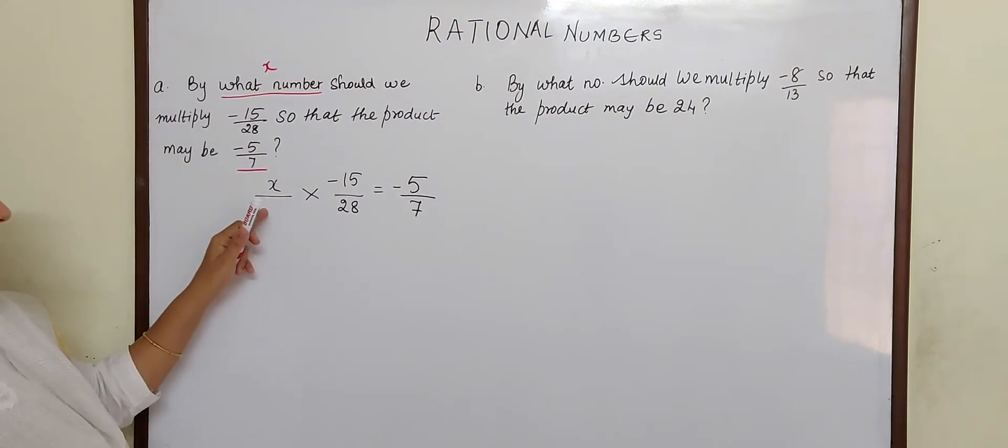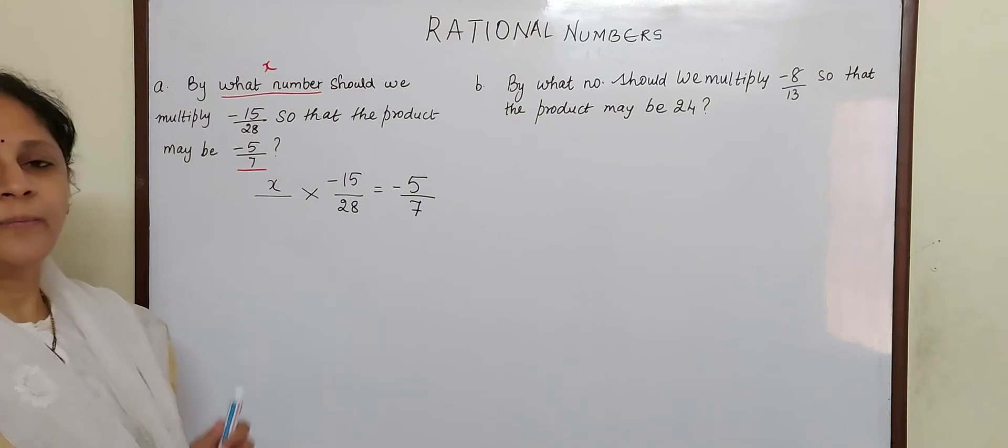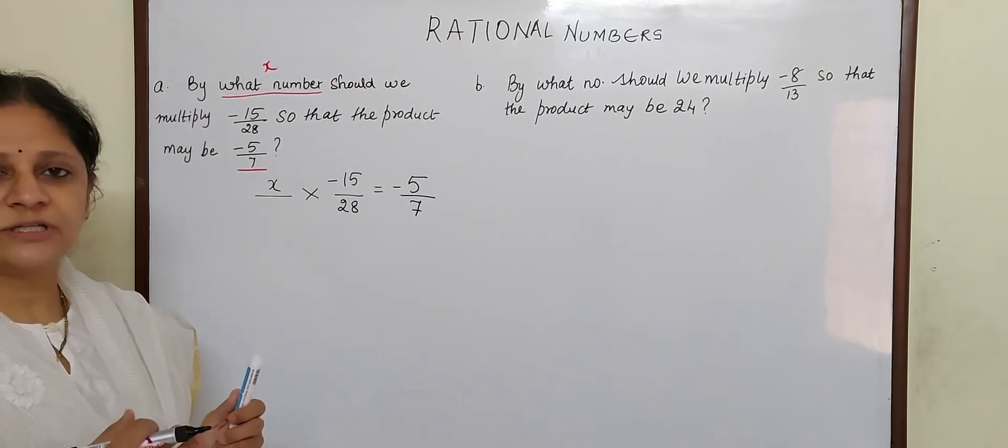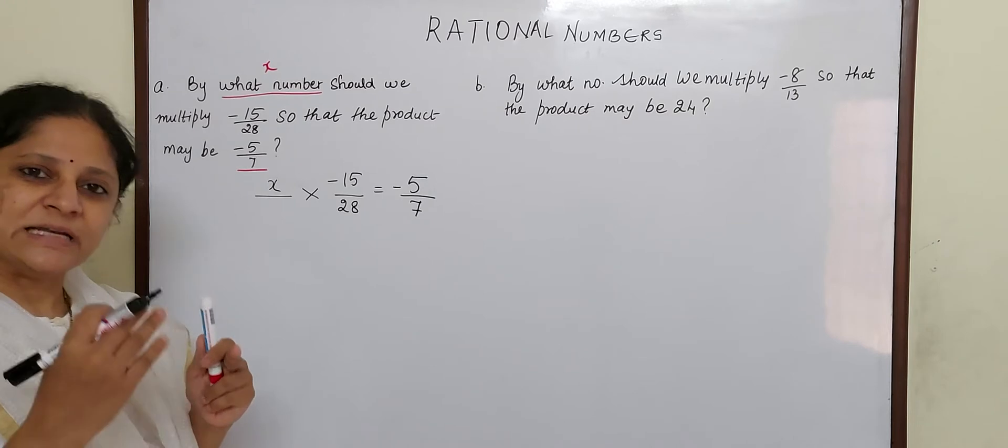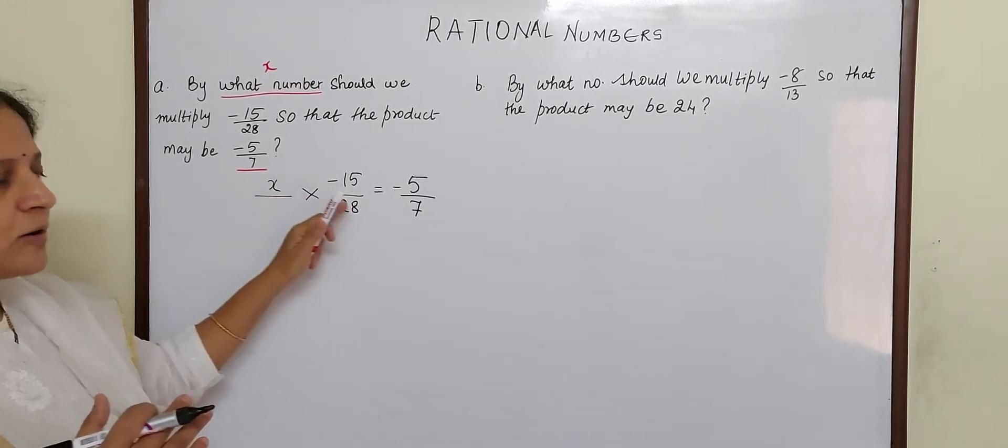Now children, this x can be in this place or this place, because whenever you multiply two numbers, the answer does not change. If you change the order, it is 2 times 3 is 6 and 3 times 2 is 6. So you can put this x here or here.